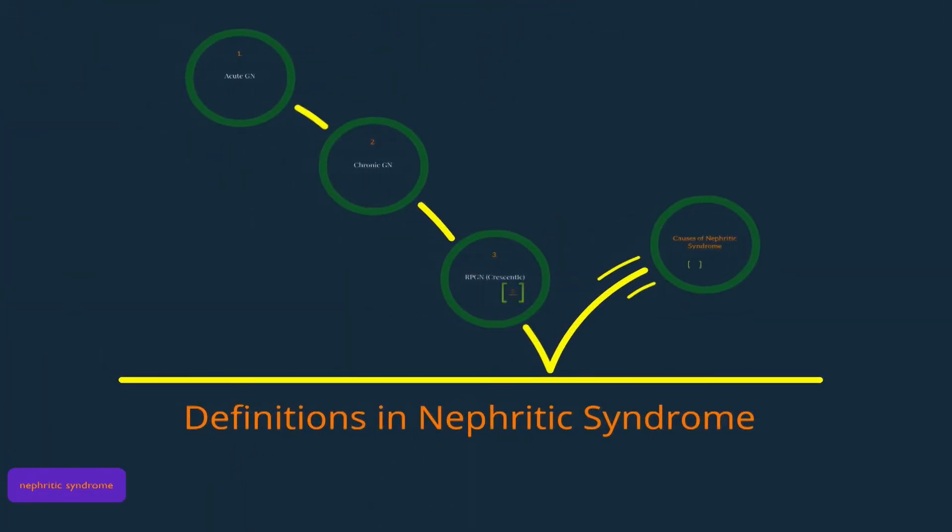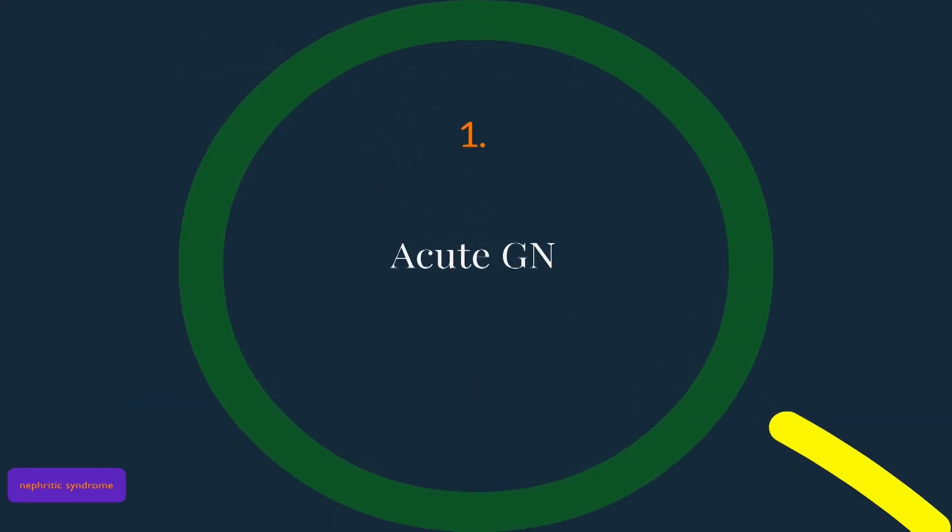Another confusing topic is how to define nephritic syndrome. There are many different terms, so let's talk about those individually. The first is acute glomerulonephritis. This simply means the patient has an active urinalysis with blood and protein, and we are not certain if this is a long-term or short-term problem.